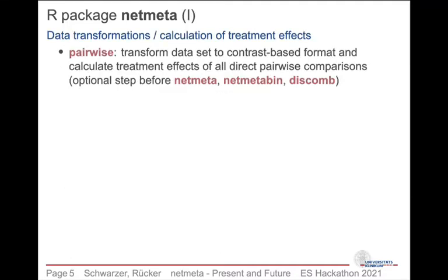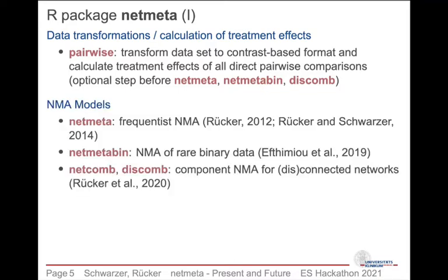Here are the most important functions from R-Package NetMeta. The first is pairwise, which can be used to transform datasets into a format used in the network meta-analysis functions, and it also calculates treatment estimates for all pairwise comparisons. The network meta-analysis models are then fitted using netmeta for the standard frequentist NMA method, netmetabin for rare binary outcomes, and netcom and discom for component NMA for connected or disconnected networks.